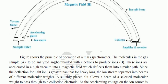The figure shows the principle of operation of a mass spectrometer. The molecules in the gas to be analyzed are bombarded with electrons to produce ions.